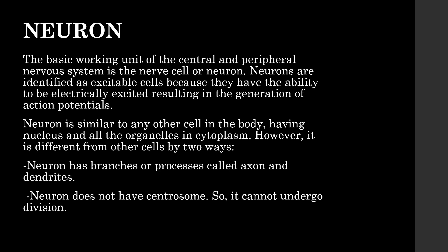First, neurons have branches or processes called axons and dendrites. Second, neurons do not have centrosomes, so they cannot undergo cell division.